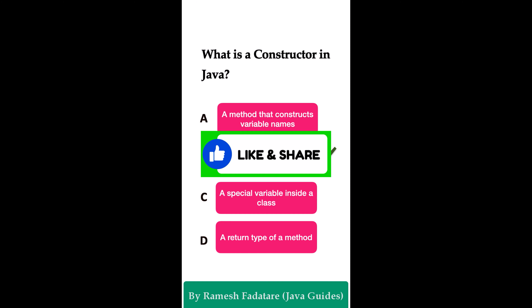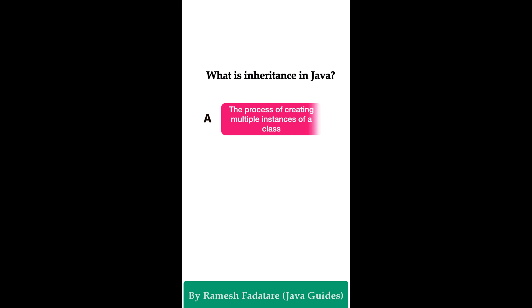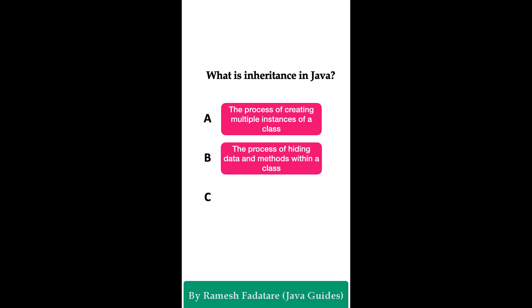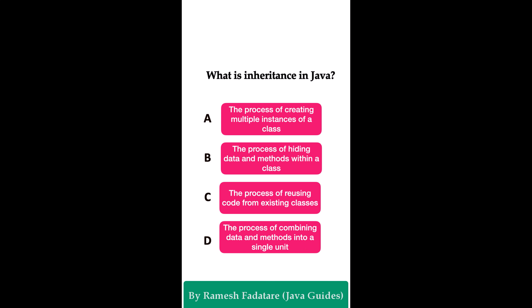What is inheritance in Java? Option A: the process of creating multiple instances of a class. Option B: the process of hiding data and methods within a class. Option C: the process of reusing code from existing classes. Option D: the process of combining data and methods into a single unit. The correct answer is option C. Inheritance is a mechanism that allows a class to inherit properties and methods from another class, promoting code reusability. A subclass can inherit from a superclass and also define its own unique properties and methods.